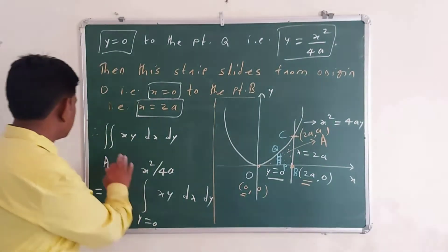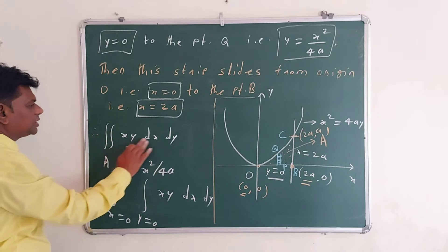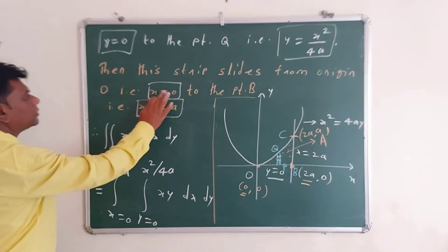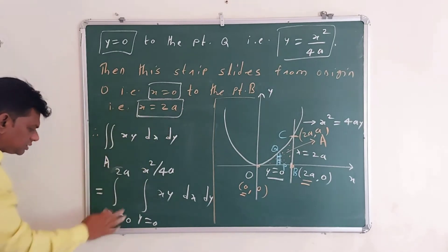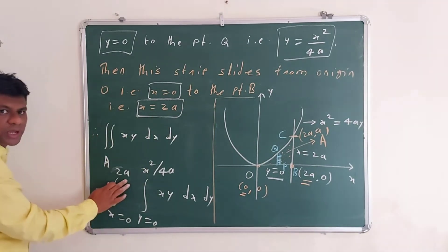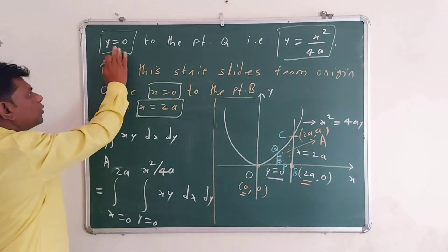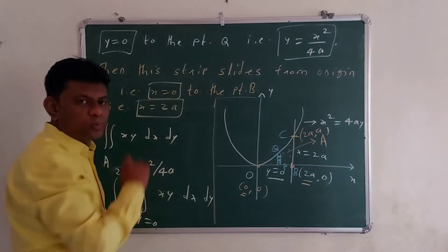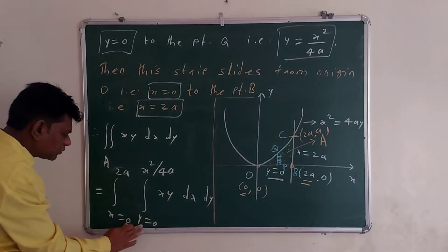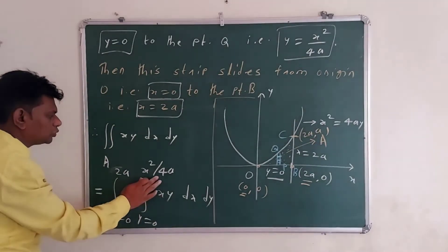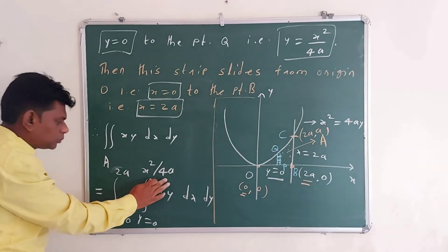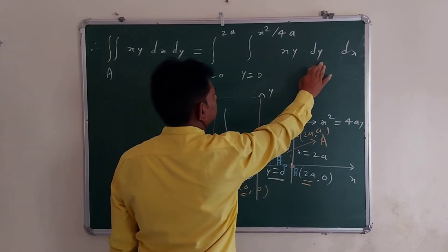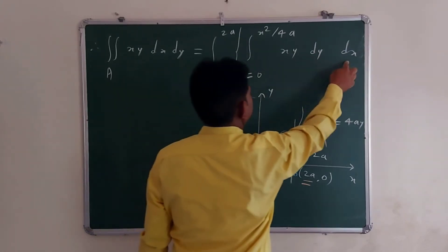Therefore, the double integral over region A of X·Y dX dY equals: X varies from 0 to 2A, and Y varies from Y = 0 to Y = X² / 4A. So the limits of X are 0 to 2A, and the limits of Y are 0 to X² / 4A. We first integrate with respect to Y.